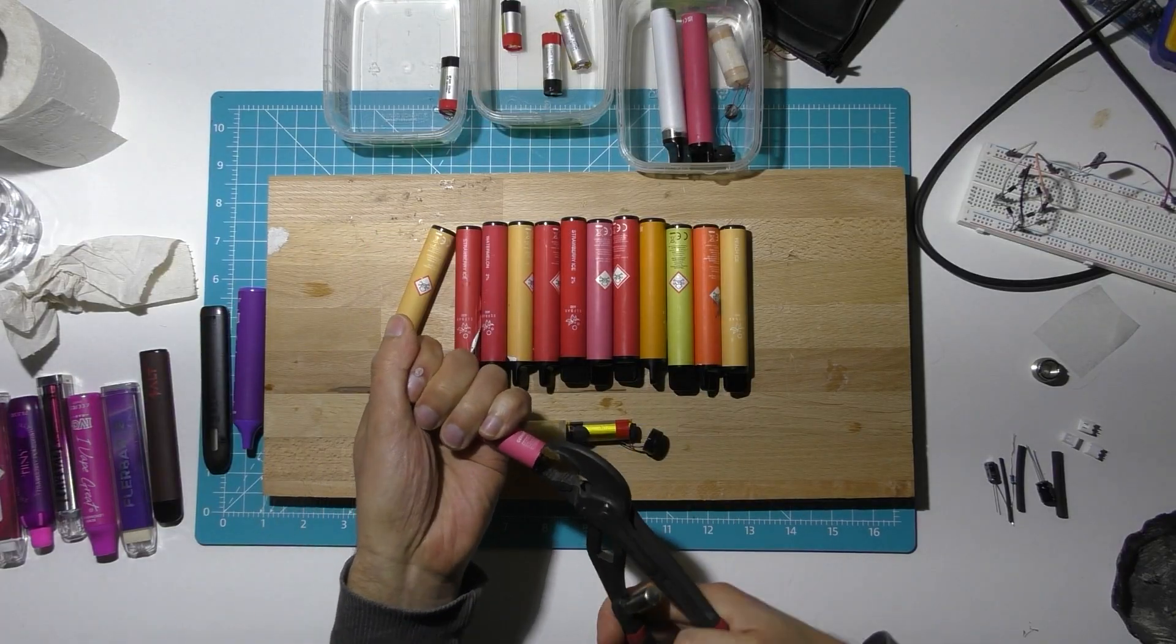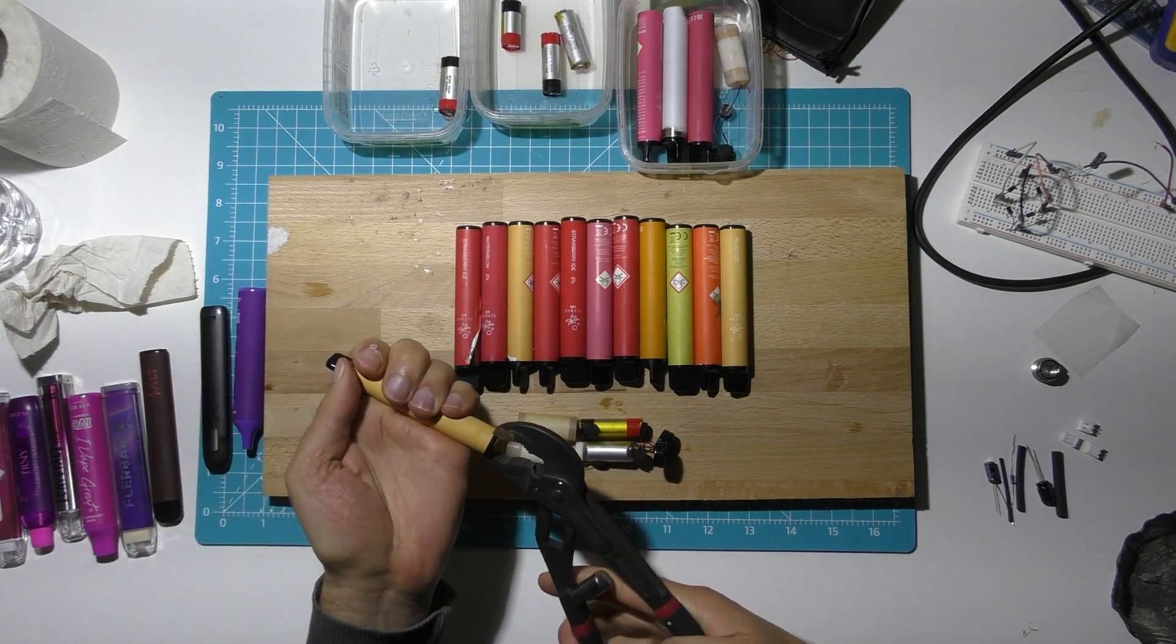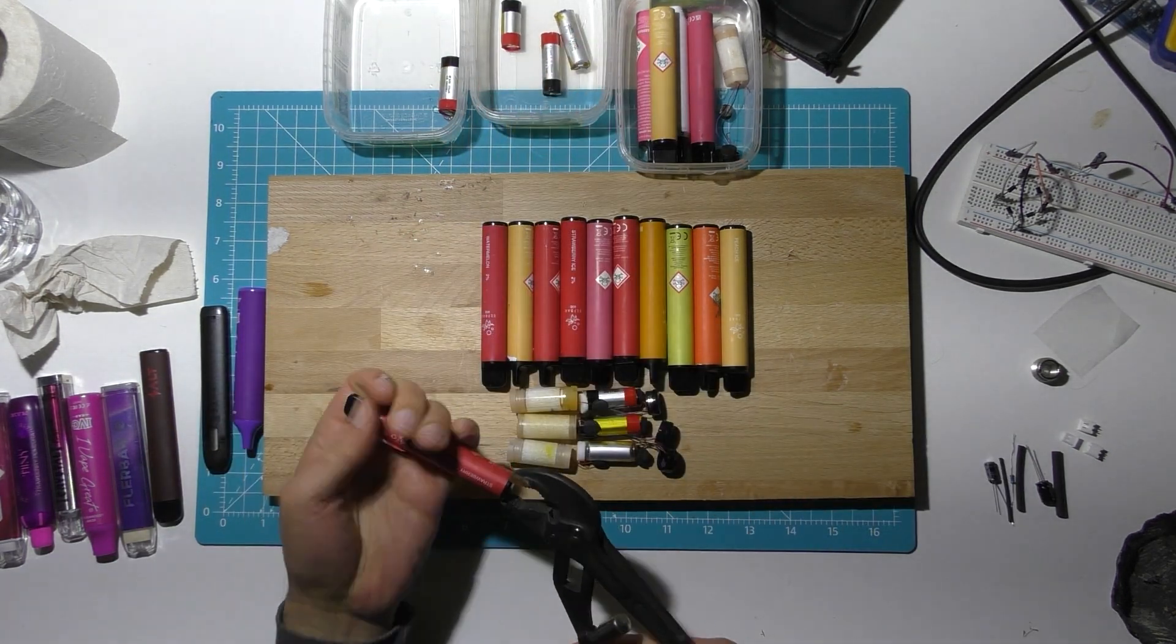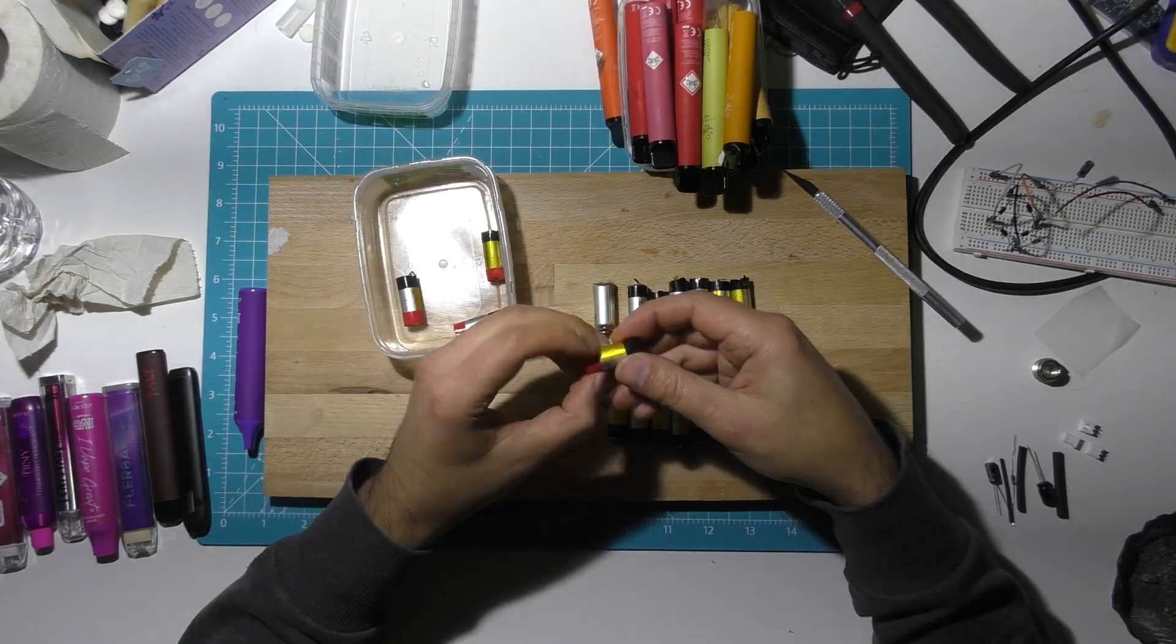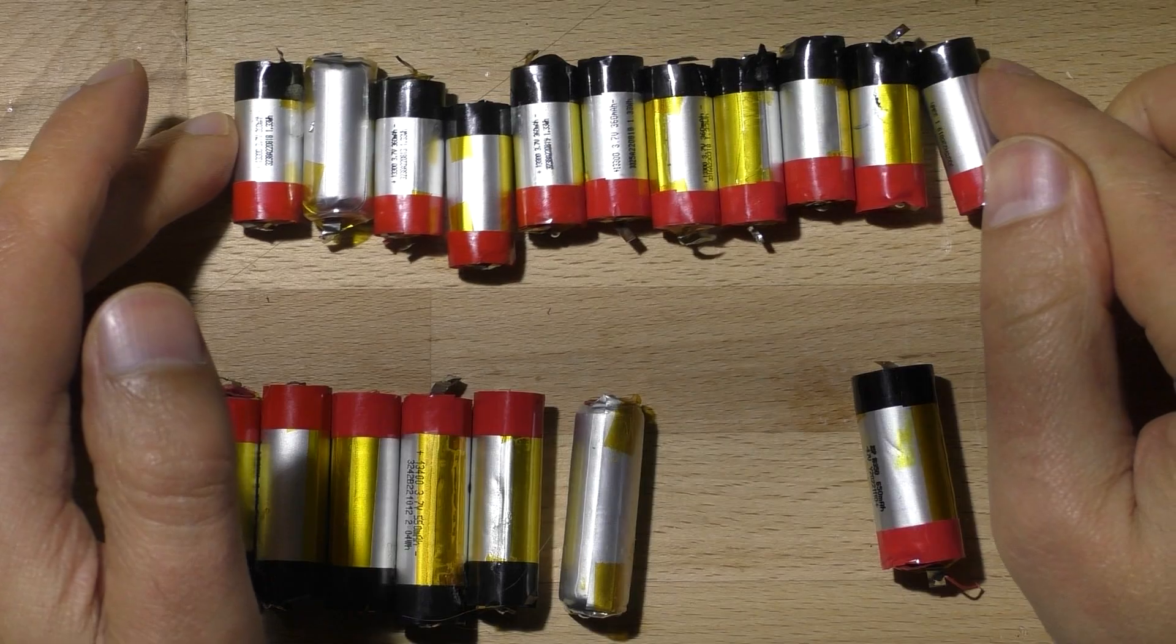So I'm opening them up with a pair of pliers. Usually you just pull the back off them and slide the little cell out. Just unsolder the two little spots on it. You have to be careful not to get the cells too hot.